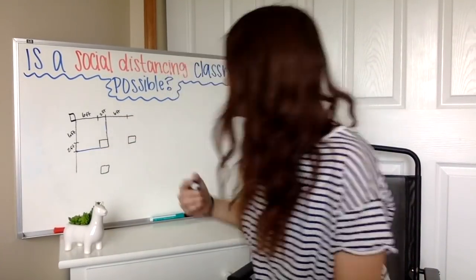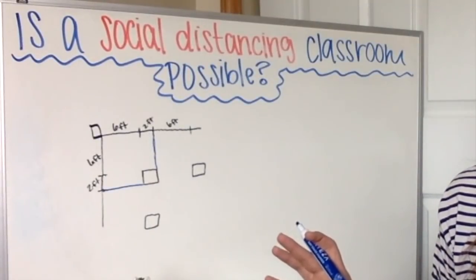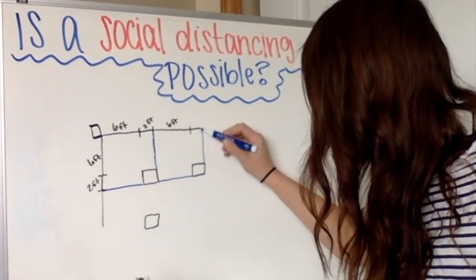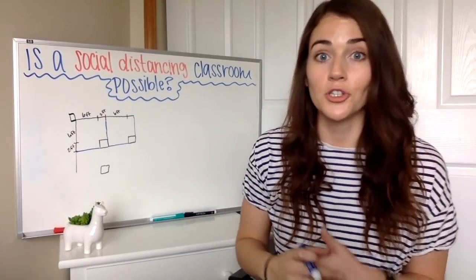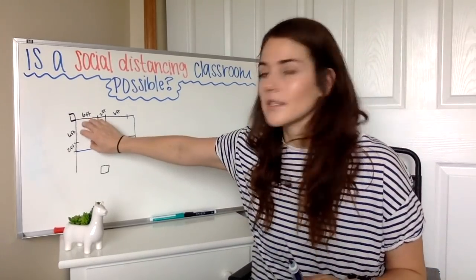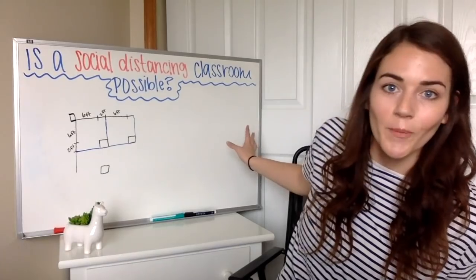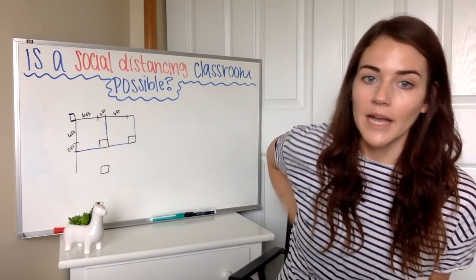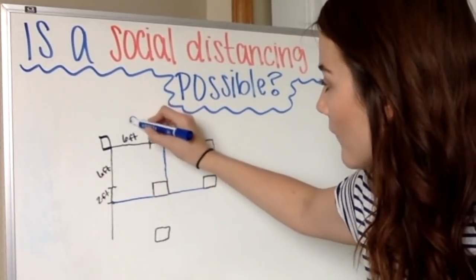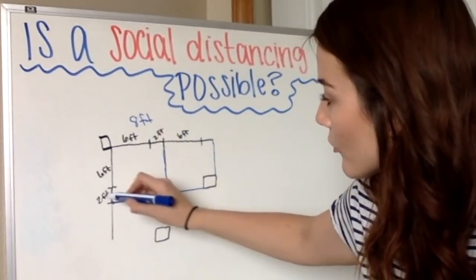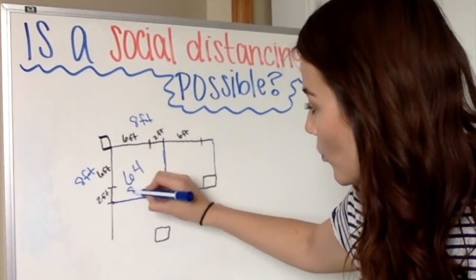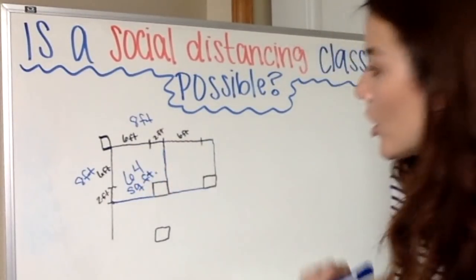You can see that's approximately the space it's going to take for each student. They all should be equally spaced, so they all should have the same amount of square footage — which is a lot easier to find than creating all of them and finding the total. We have six feet for the distance and then two feet for the desk, so this is eight feet by eight feet. Each student is taking up approximately 64 square feet.